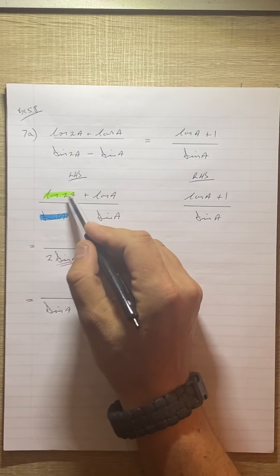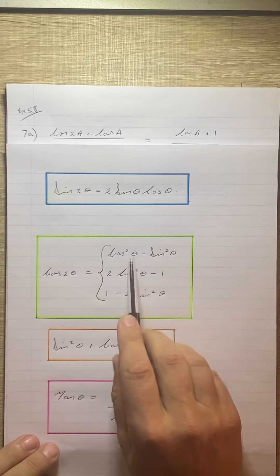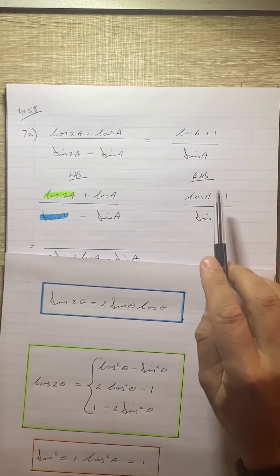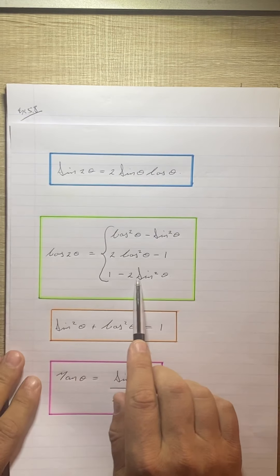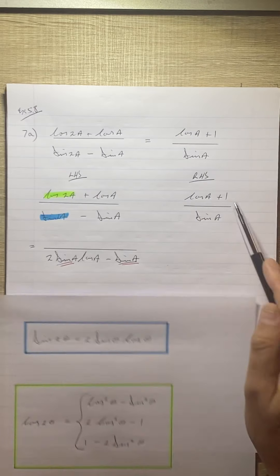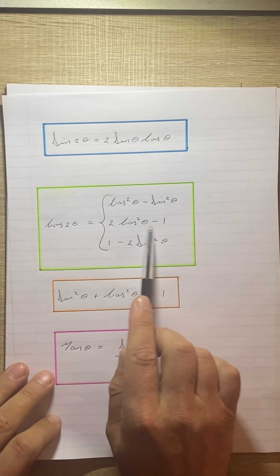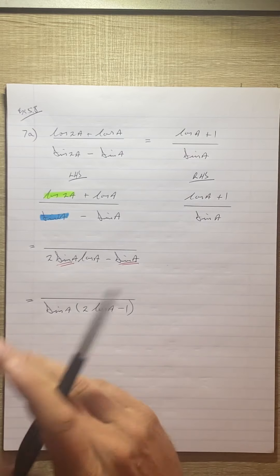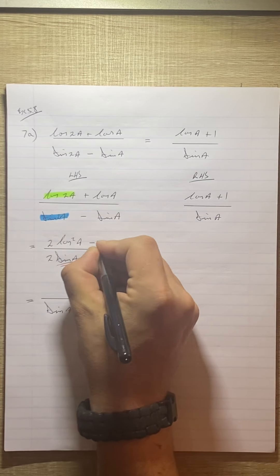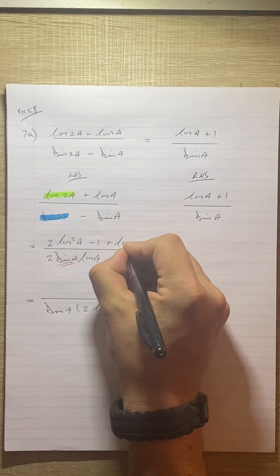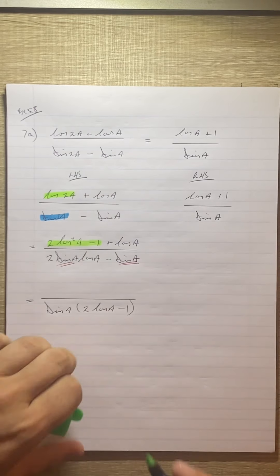At the top we just need a cos a plus 1, so that'll help me decide what to expand cos 2a to. It doesn't make sense introducing a sin because we don't have a sin at the top, and we need to get rid of this cos. So the cos double angle I'm going to use is 2 cos squared a minus 1. So the numerator now becomes 2 cos squared a minus 1 plus cos a.